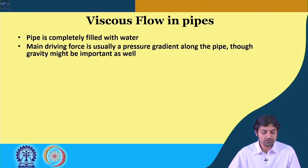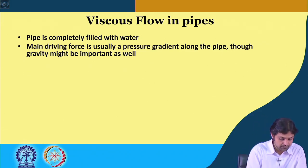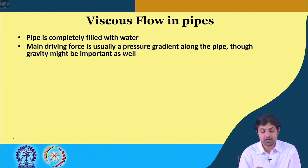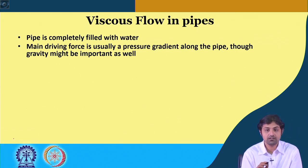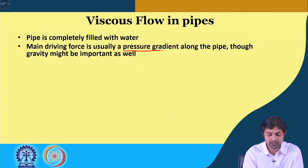The main driving force in pipe flow is usually a pressure gradient along the pipe. If you remember in open channel flow, the main driving gradient was gravity, but here it is the pressure gradient along the pipe.